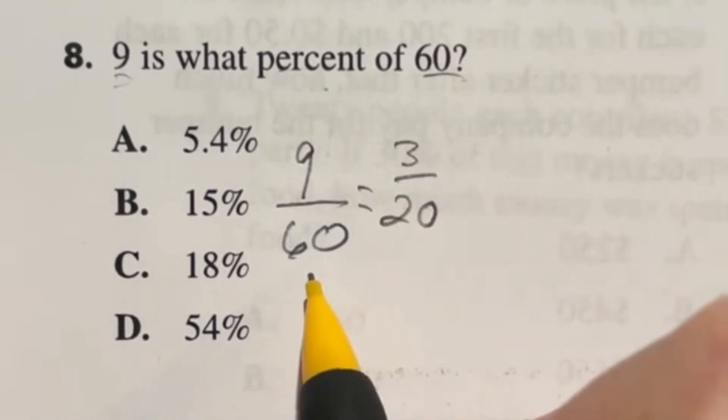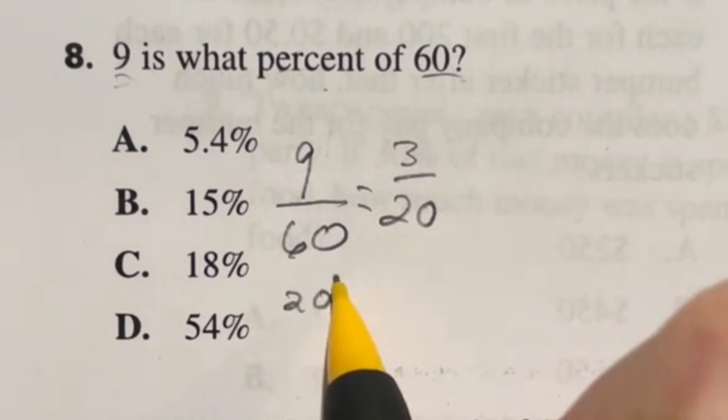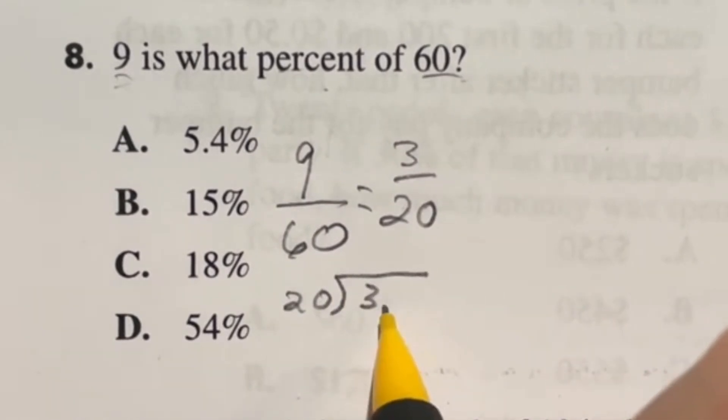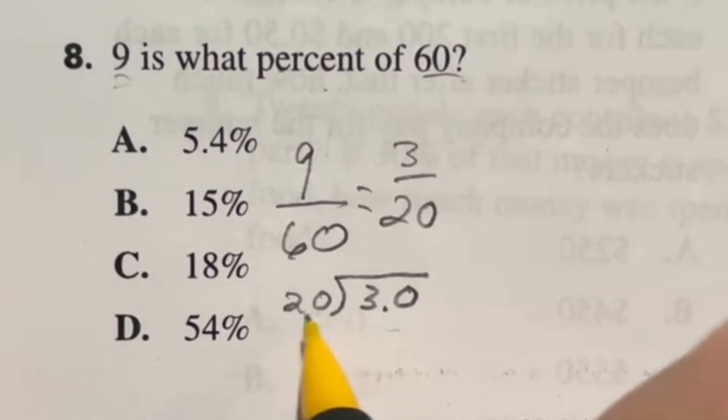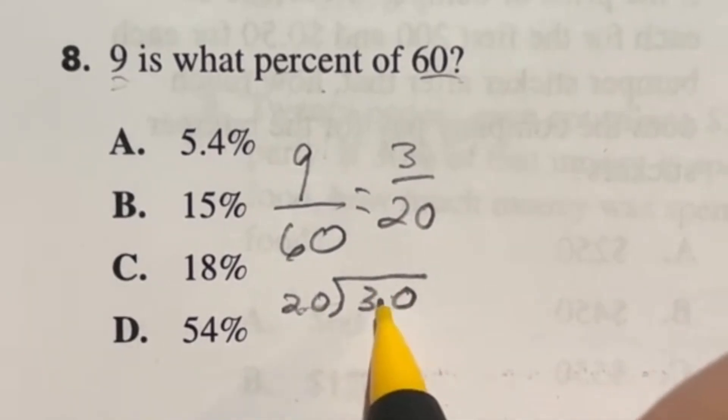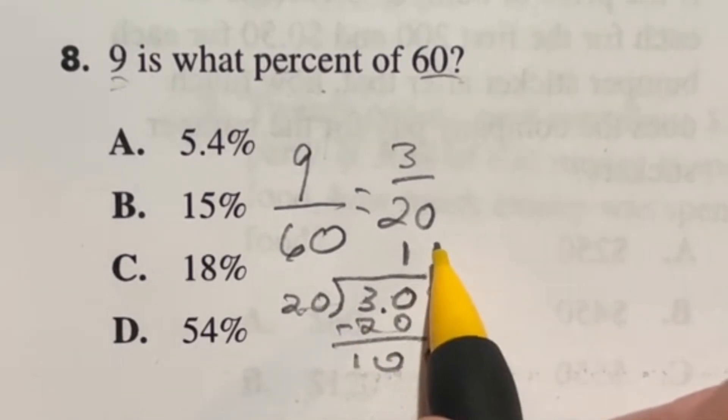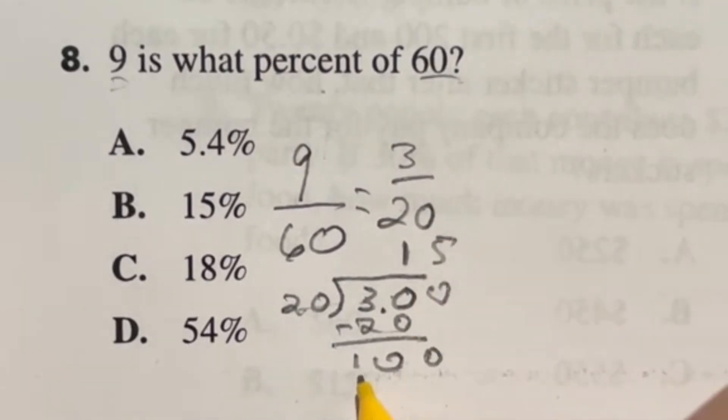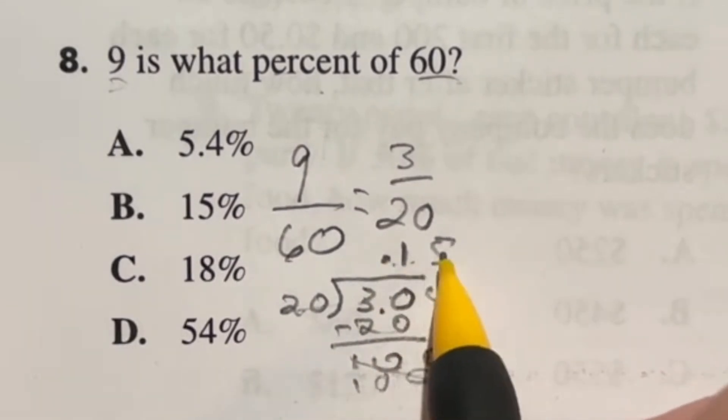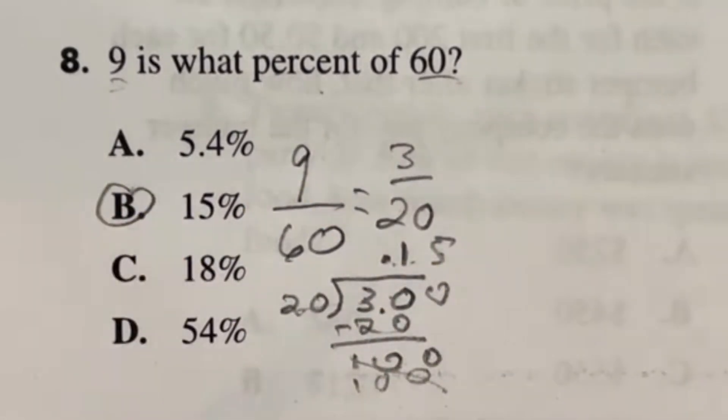Now this is actually a long division question so we're going to do 20 divides 3 and right off the bat we need to put that 0 there so that we can see this. It'll go into this guy one time and we'd put the 20 here and we'd subtract so 30 minus that 20 is going to give me 10 and then we bring down another 0 and now we have 100. So 20 goes into 100 how many times? Well 20 goes into 10 five times and that gives us exactly 100 so we're done with the long division. So that means that this is actually 0.15 also known as 15 percent.